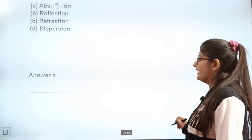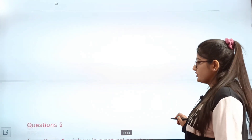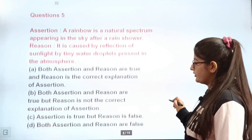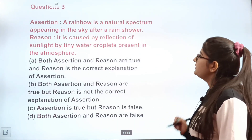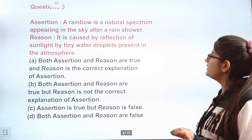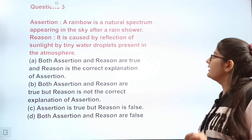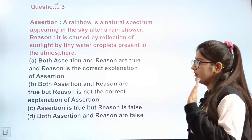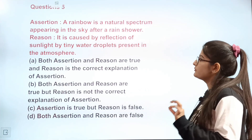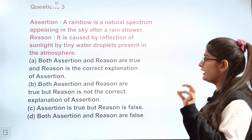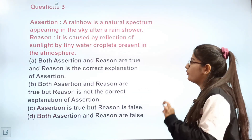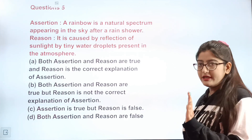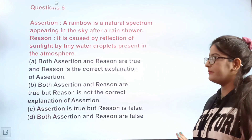Question 5 is an assertion-reason question. Assertion: A rainbow is a natural spectrum appearing in the sky after a rain shower. Reason: It is caused by reflection of sunlight by tiny water droplets present in the atmosphere.